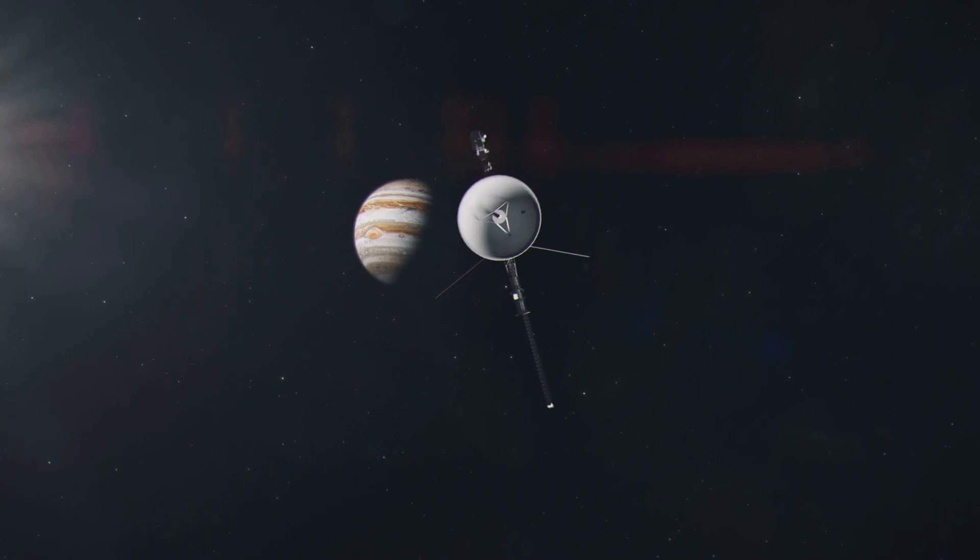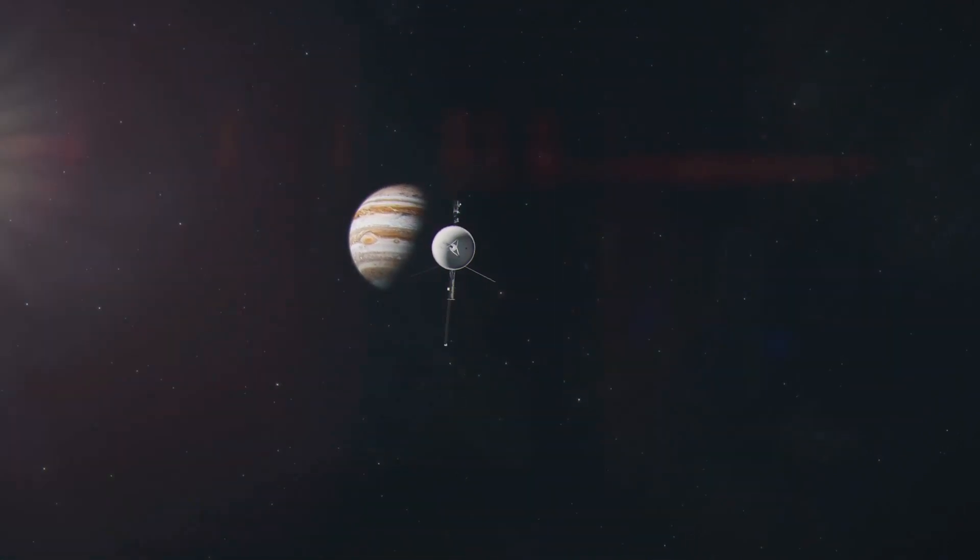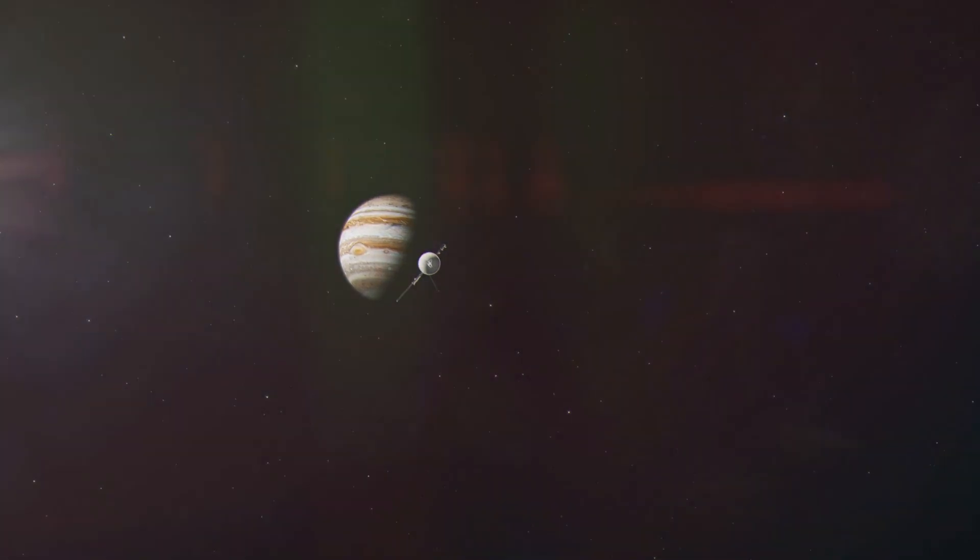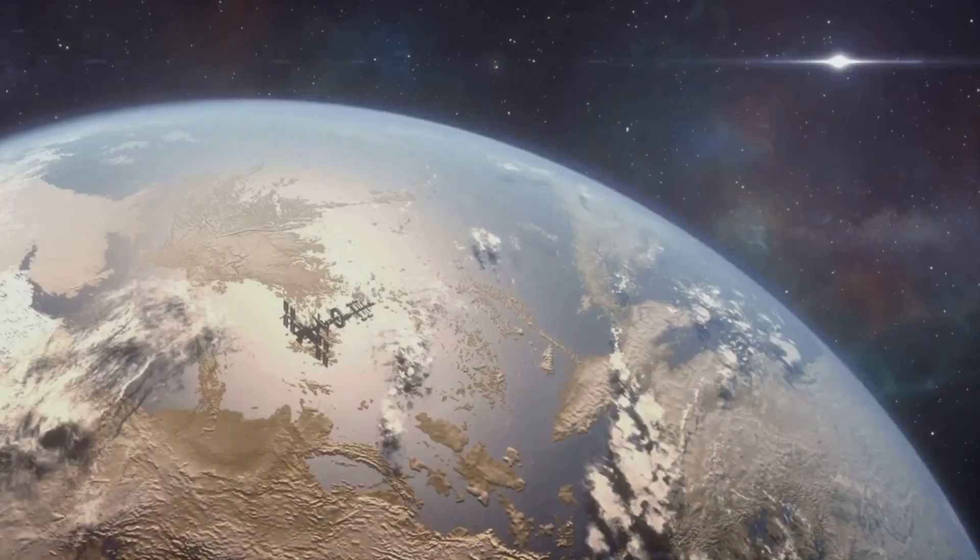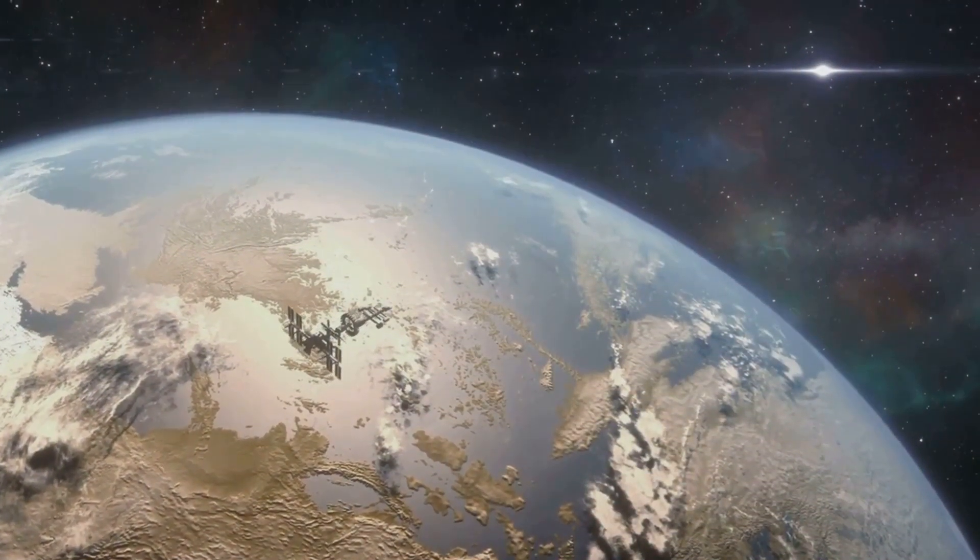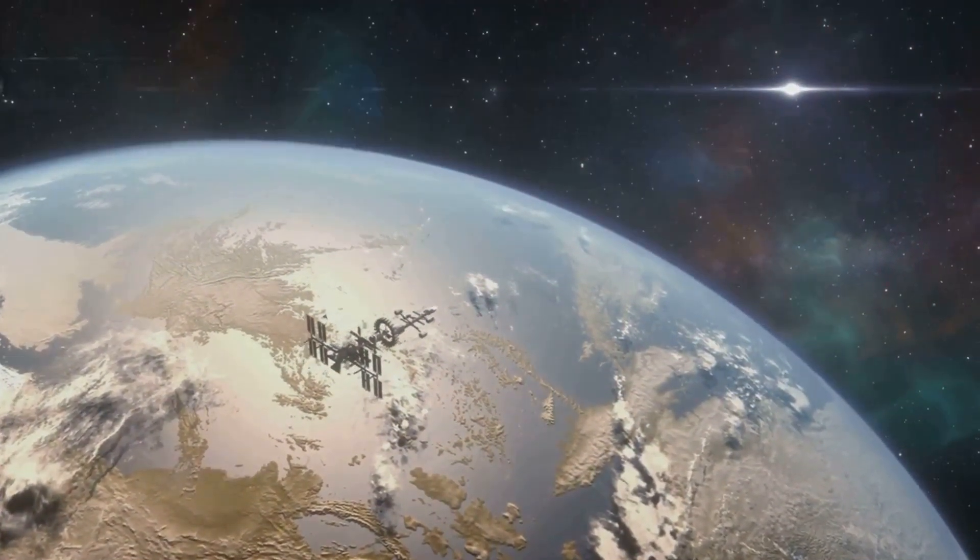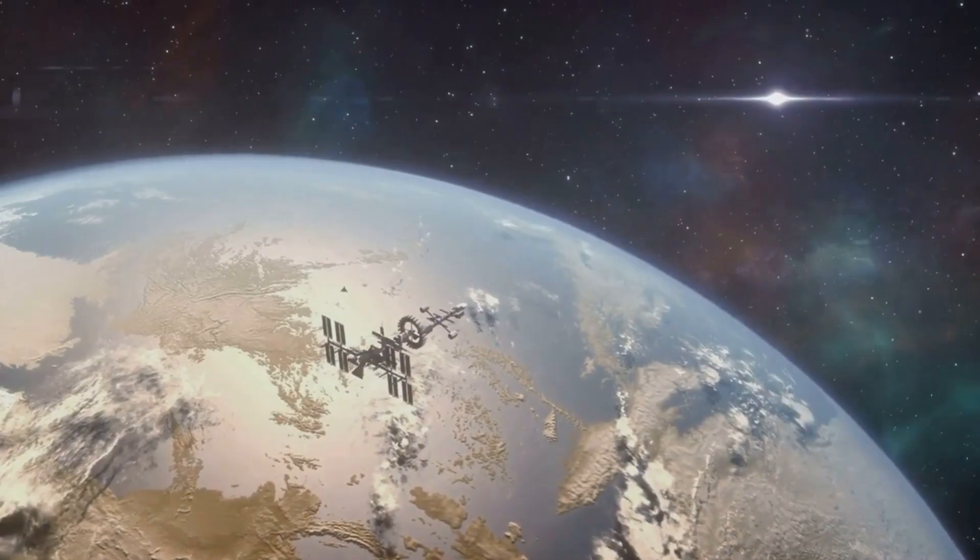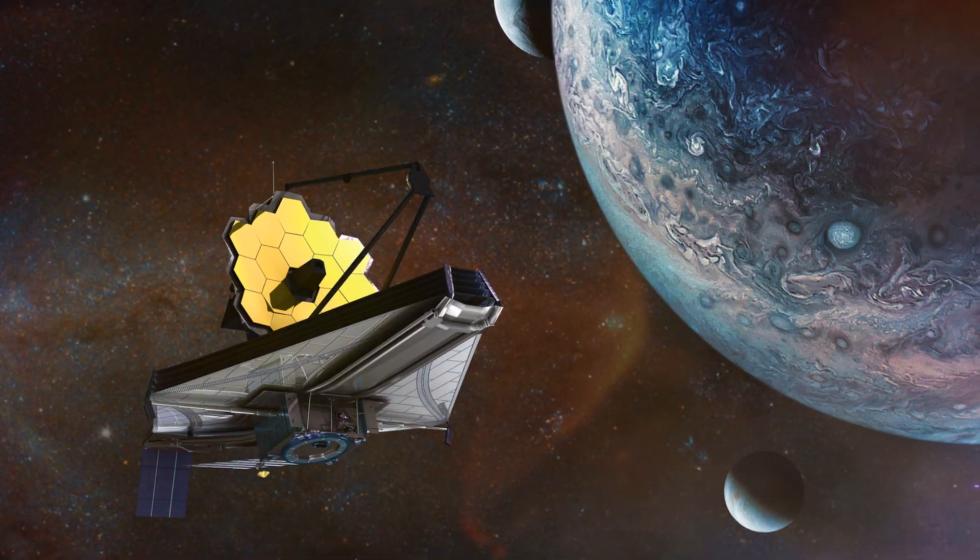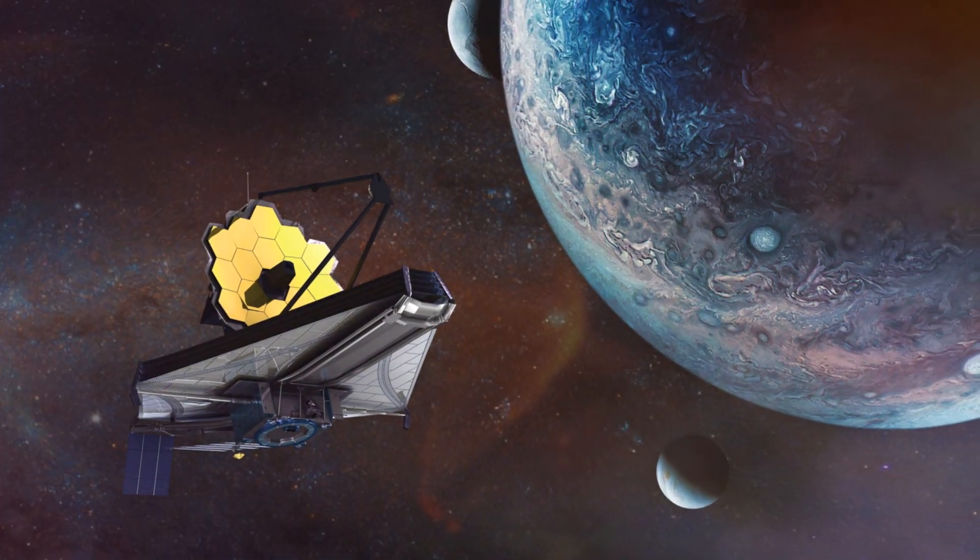The James Webb Space Telescope also made significant strides in the detection of exoplanets. Its advanced technology allowed it to directly image these distant worlds, providing vital information about their atmospheres. For instance, the telescope was able to detect the presence of water vapor in the atmospheres of several exoplanets, a discovery that has profound implications for the search for life beyond Earth.